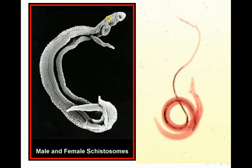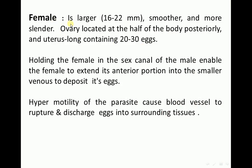The male is shorter and wider than the female, which is larger and more slender than the male. This image shows the oral suckers and ventral suckers of the male. Another image shows the oral suckers and ventral suckers of the male, and we can see the small spherical testes behind the acetabulum. The female is in the gynecophoreal canal of the male. As we said, the female is larger, smoother, and more slender than the male.